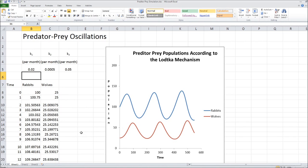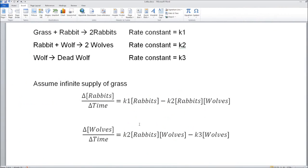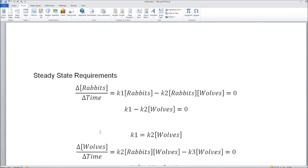Now you might ask the question, is there any situation where there would not be this oscillation? Well, if we look at the equation for the rate of change of rabbits and wolves, if we set those rates equal to 0, as we do down here, if the change in rabbit population with time is set equal to 0, we can cancel out the rabbits and we get this relationship that k1 equals k2 times the wolves.